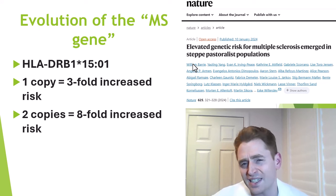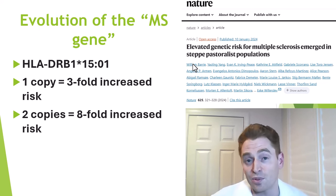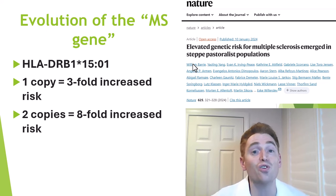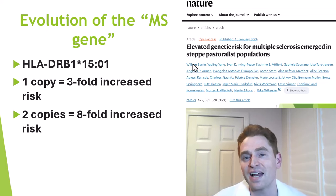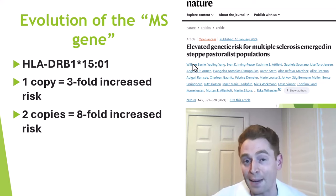In modern times, we think of it as a bad gene — after all, it increases your risk of an unfavorable disease. But this article argues that it may have been a good thing and may have been selected for in our ancestors, specifically in the steppe population of Eurasia, because it provided resistance to certain types of infections. I'll explain a little bit about the gene, then talk about the methodology of the study and their hypothesis for why this occurred.